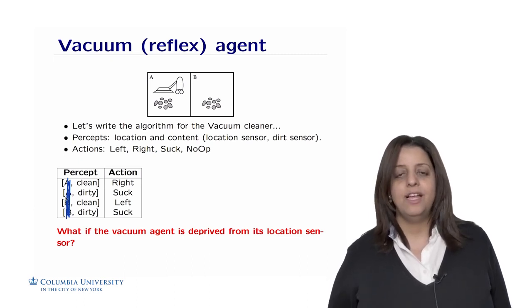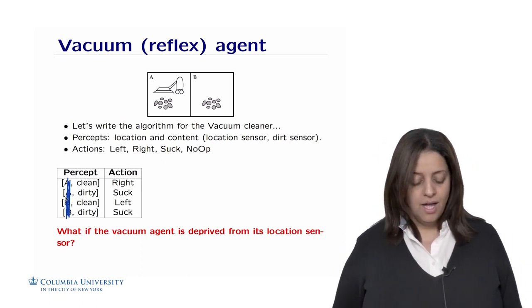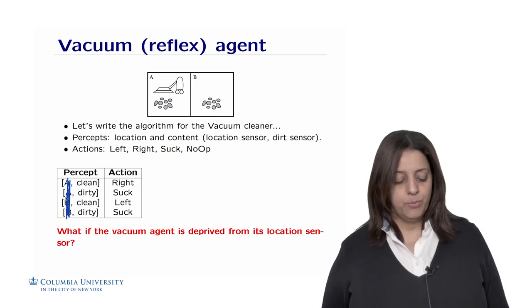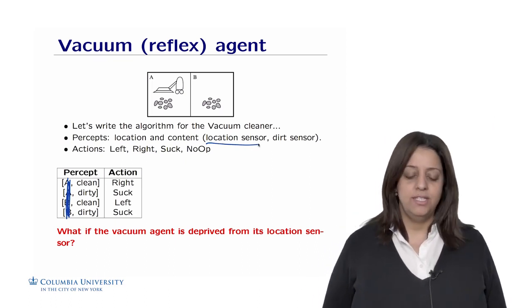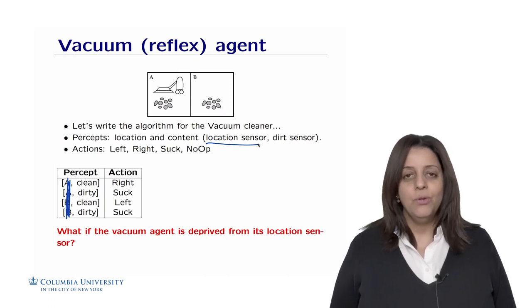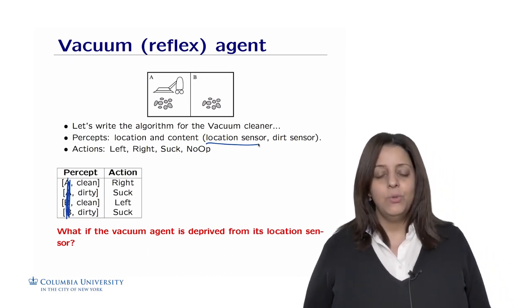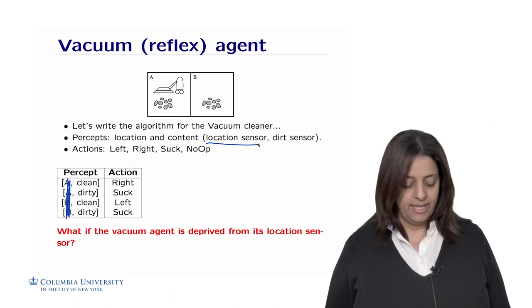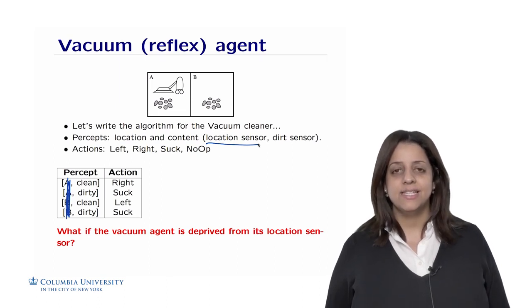If we're in room A and don't know our location and decide to always go left, we'll be stuck in an infinite loop — going left continuously. Similarly, if in room B we always go right. A trick to avoid this is to turn the simple deterministic reflex agent into a randomized one: when the room is clean and the location is unknown, the agent flips a coin to decide between left and right. This is better than getting stuck in a loop.